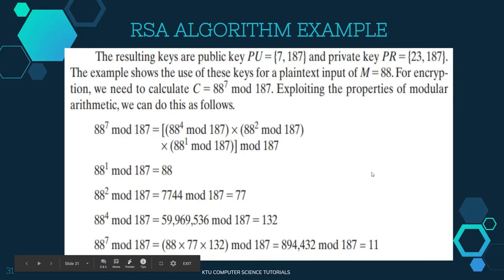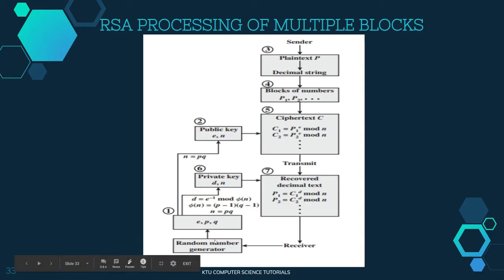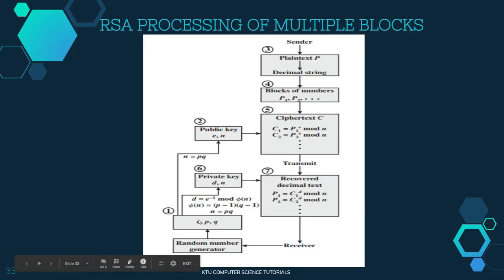This is the processing of multiple blocks in RSA. The steps are: random number generation to choose P and Q, then choose E, calculate N equals PQ, calculate φ(N) equals (P-1)(Q-1), calculate E, and then calculate D using the equation D equals E inverse mod φ(N). This gives us the public key (E, N) and private key (D, N).